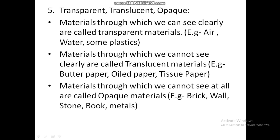On the basis of transparency: some materials can be classified as transparent, translucent, or opaque. Materials through which we can see clearly are called transparent materials — examples: air, water, some plastics. Materials through which we cannot see clearly are called translucent materials — examples: butter paper, oil paper, tissue paper, etc.